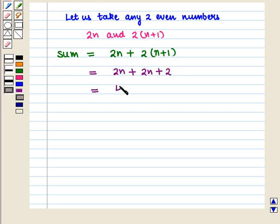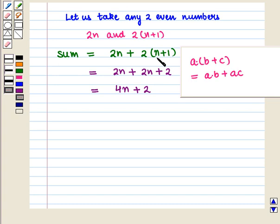So, it is equal to 4n plus 2. Here we have used the distributive property which says a(b+c) is equal to ab plus ac.